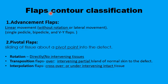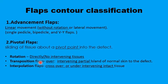Flaps are classified into advancement and pivotal flaps. Advancement flaps are those that are moved in one linear direction without any rotation or lateral movements, like in single pedicle advancement flaps, bipedicle, or V-to-Y flaps. When flaps are rotated around a pivotal point, they can either be simple rotation flaps — when the flap is directly rotated into the defect with no intervening tissues — or transposition flaps if rotated over partial intervening tissue, like Z-flaps, or interpolated flaps if crossing over intact tissues.